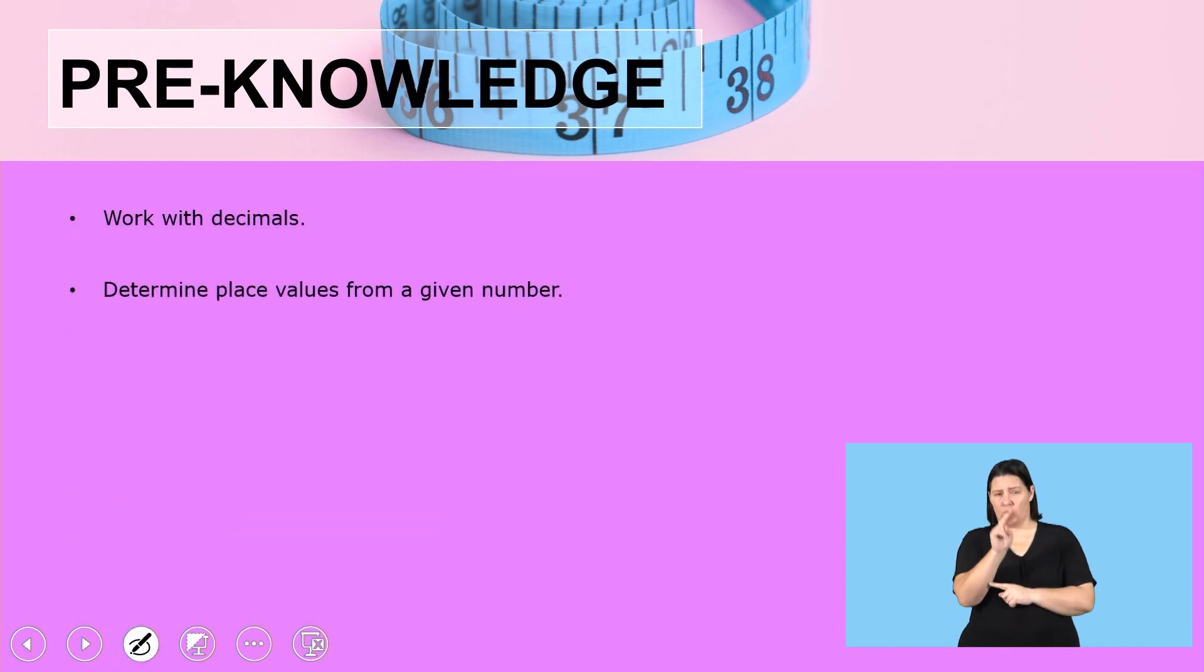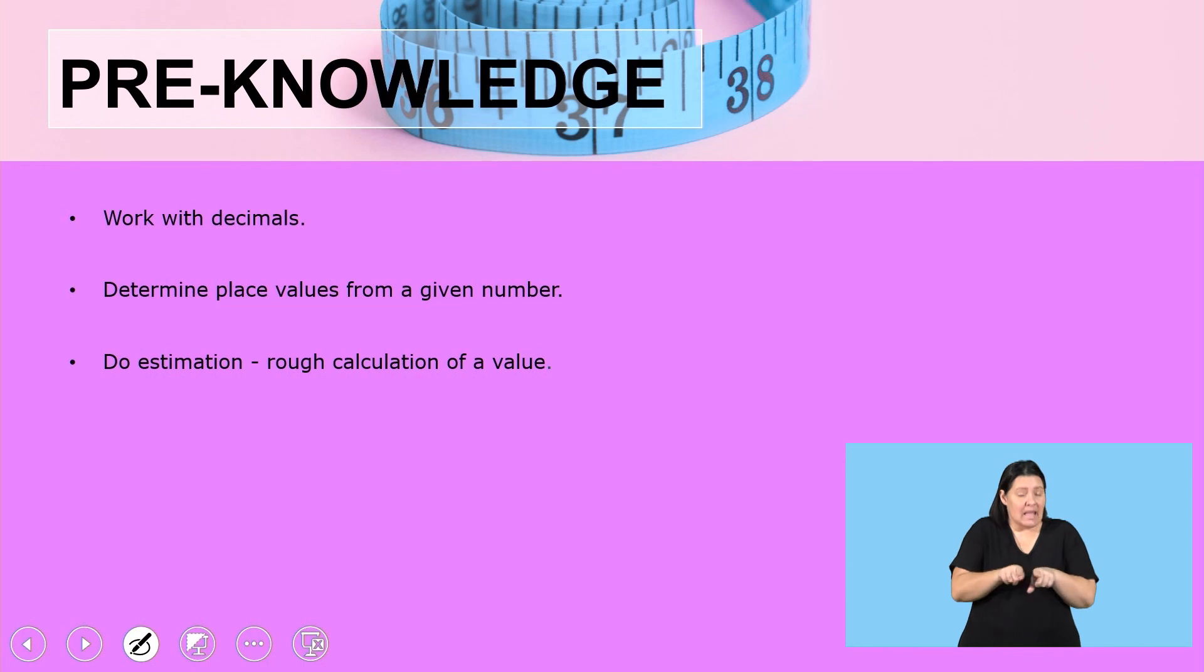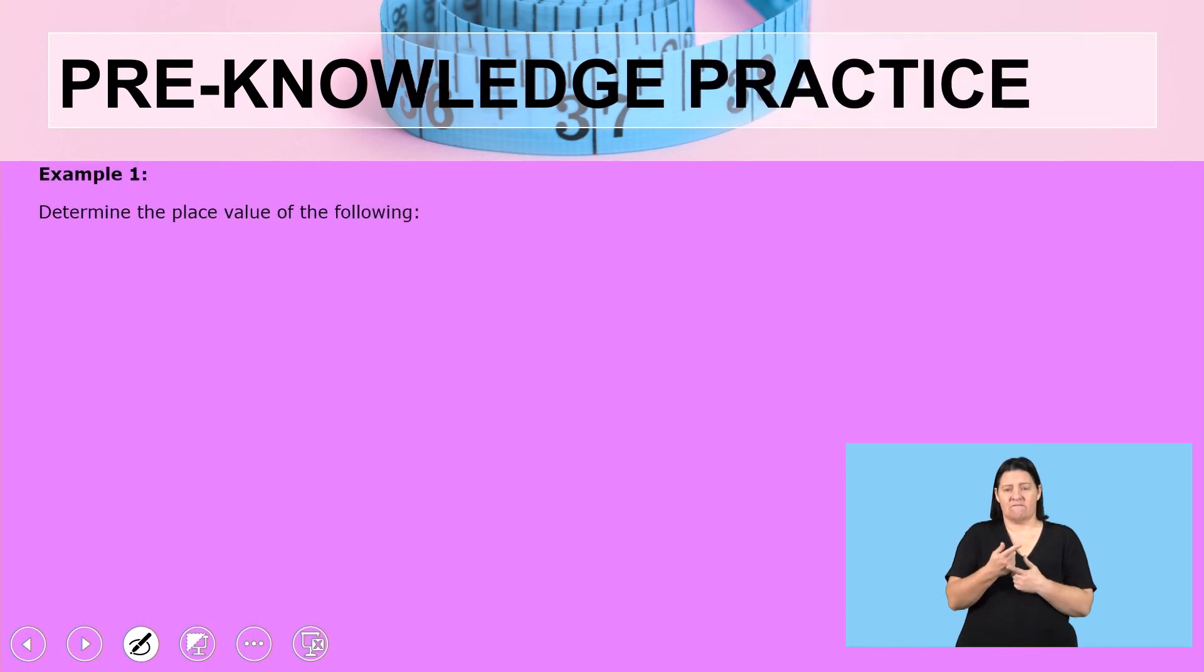Let us have a look at the pre-knowledge, what you've acquired in your previous grades that we can use as we do this rounding. The pre-knowledge includes working with decimals, determining place values from a given number, and estimation, which is the rough calculation of a value. Let us do a little bit of practice to recap.